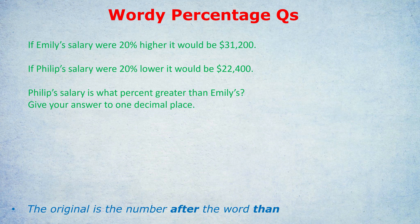Starting with this question. If Emily's salary were 20% higher, it would be $31,200. If Philip's salary were 20% lower, it would be $22,400. Philip's salary is what percent greater than Emily's? Give your answer to one decimal place.